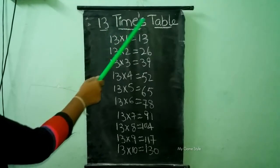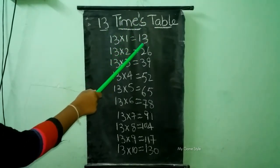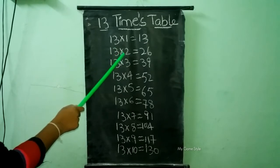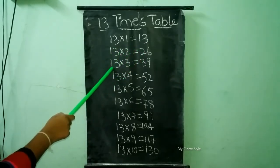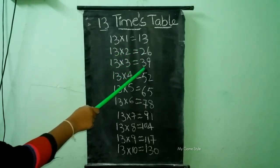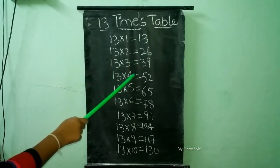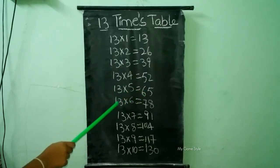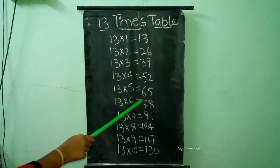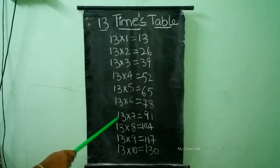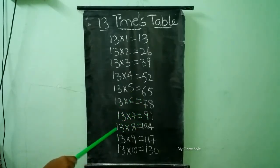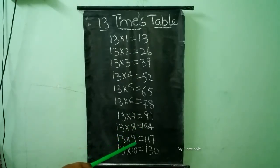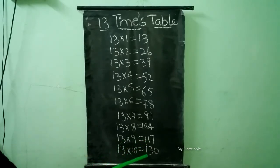13 times table. 13 times 1 is equal to 13. 13 times 2 is equal to 26. 13 times 3 is equal to 39. 13 times 4 is equal to 52. 13 times 5 is equal to 65. 13 times 6 is equal to 78. 13 times 7 is equal to 91. 13 times 8 is equal to 104. 13 times 9 is equal to 117. 13 times 10 is equal to 130.